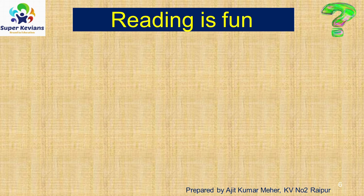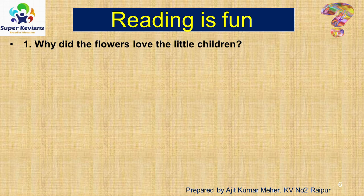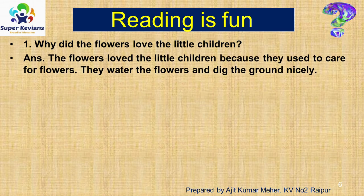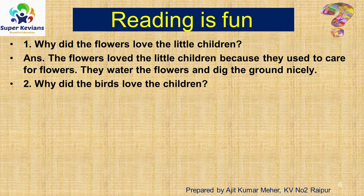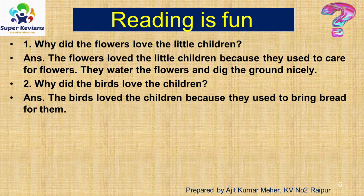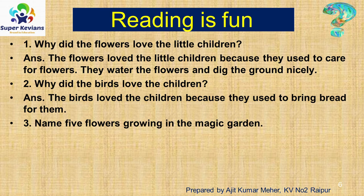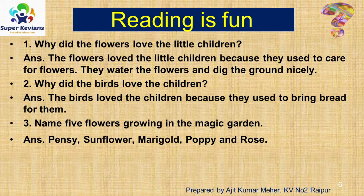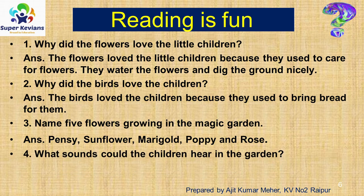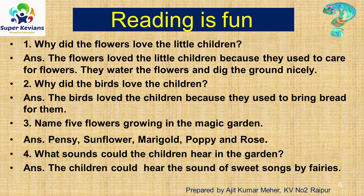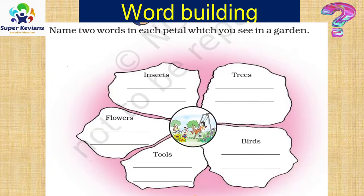Now we will discuss the question and answer. First question: Why did the flowers love the little children? The flowers loved the little children because they used to care for the flowers — they water the flowers and dig the ground nicely. Second: Why did the birds love the children? The birds loved the children because they used to bring bread for them. Third: Name five flowers growing in the magic garden — sunflowers, marigold, poppy, pansies and rose. Fourth: What sound could the children hear in the garden? The children could hear the sweet songs sung by the fairies.